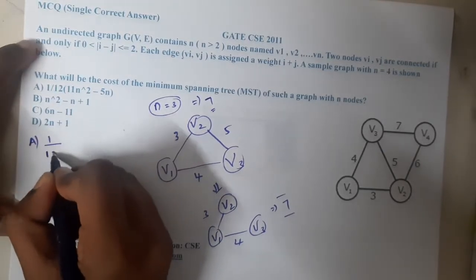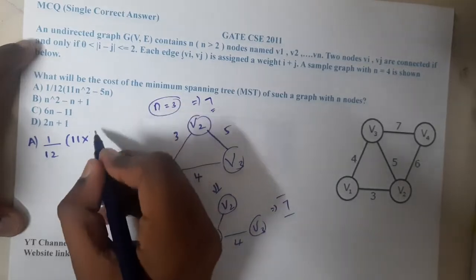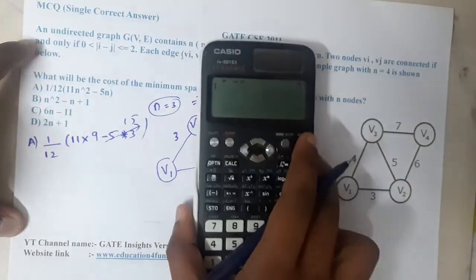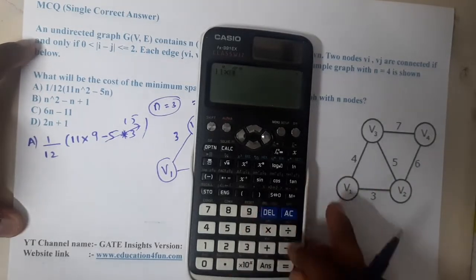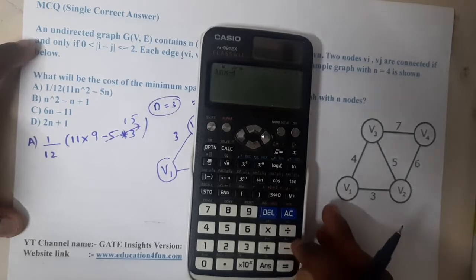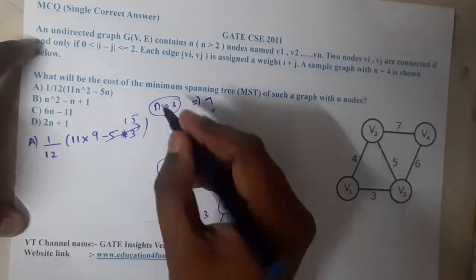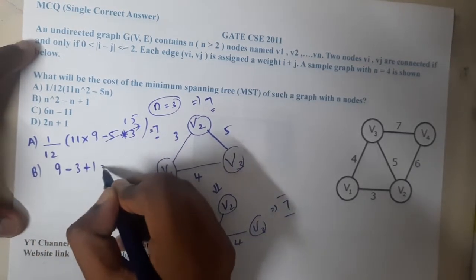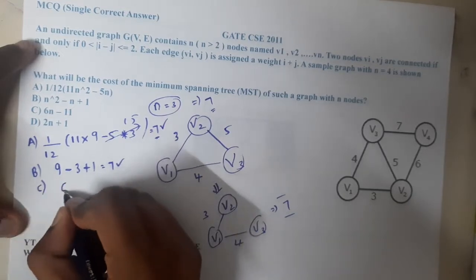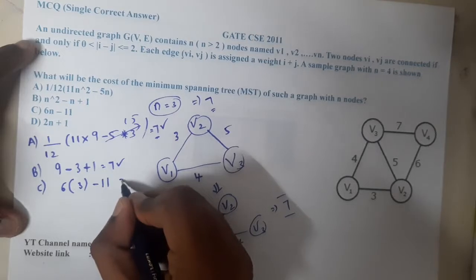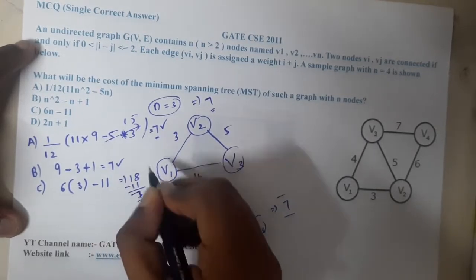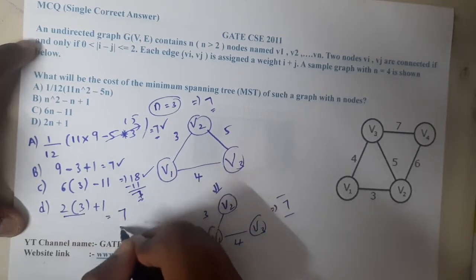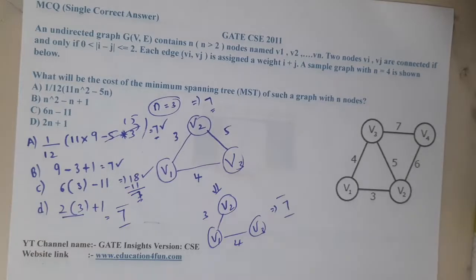Let us check the options. Option A: (1/12) × (11n² - 5n) — substituting n=3 gives (11×9 - 15)/12 = (99-15)/12 = 84/12 = 7. Option B: n² - n + 1 — gives 9 - 3 + 1 = 7. Option C: 6n - 11 — gives 18 - 11 = 7. Option D: 2n + 1 — gives 6 + 1 = 7. All four options match, so we need to try another value.